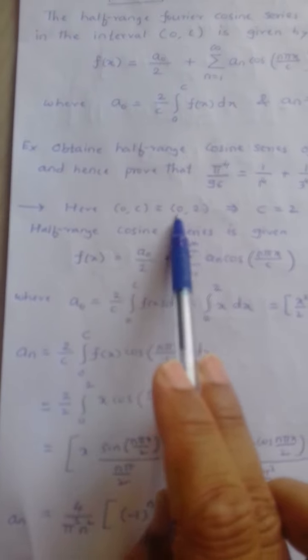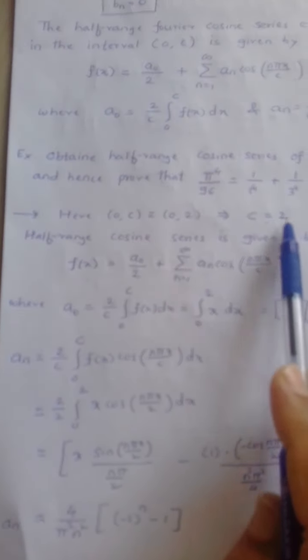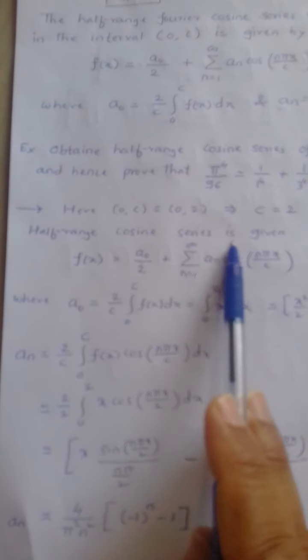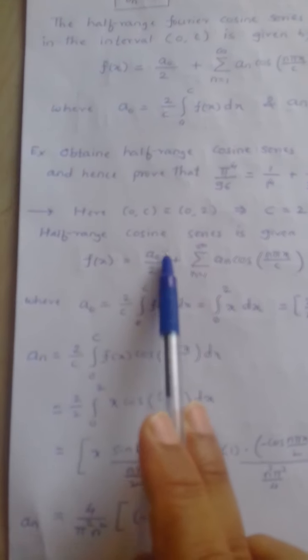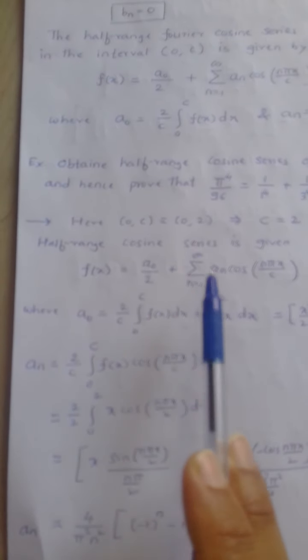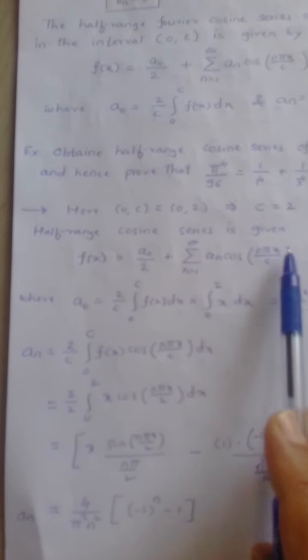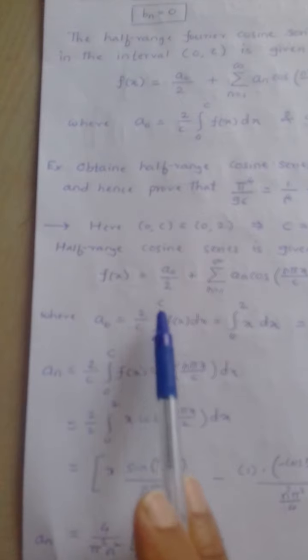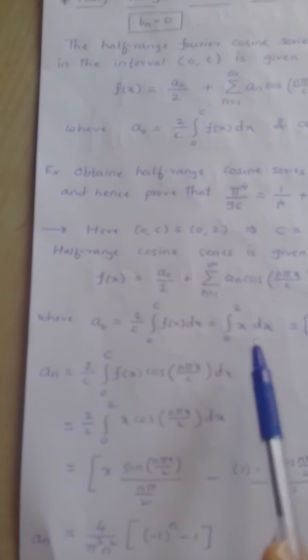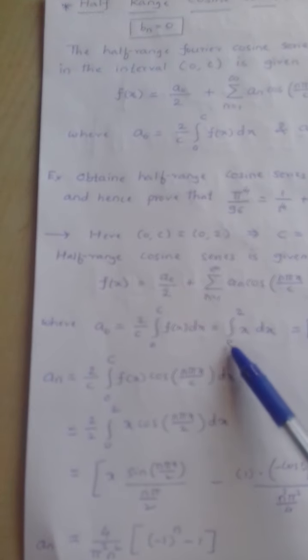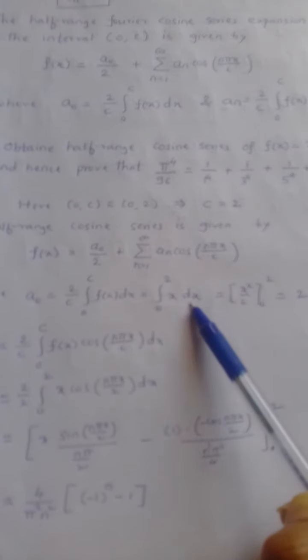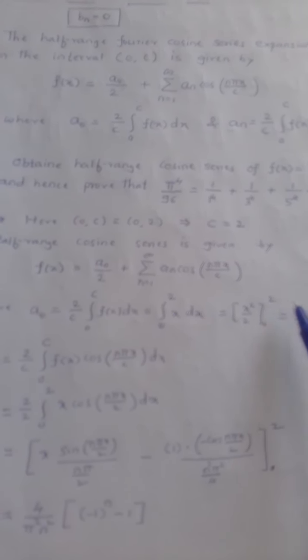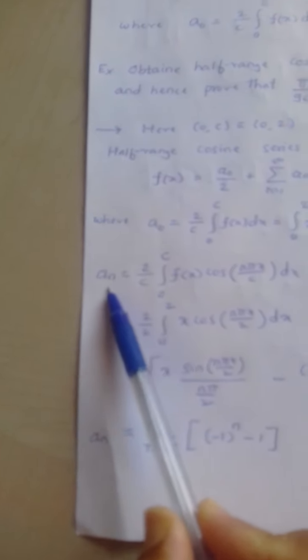Here the interval is 0 to 2, therefore the value of c is 2. The half range cosine series is f(x) = a₀/2 + summation n from 1 to infinity of aₙ cos(nπx/c). Now substituting c = 2 and f(x) = x, a₀ = (2/2) × integral from 0 to 2 of x dx = [x²/2] from 0 to 2 = 2.